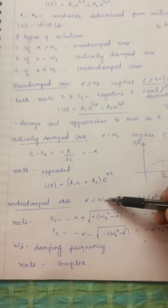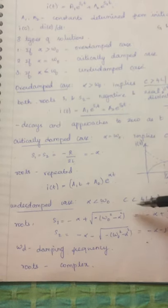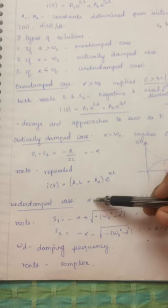In the under-damped case, alpha will be less than omega_0, so the value of C will be less than 4L/R². If you substitute alpha and omega_0 in the characteristic equation, you will get the roots, which are of complex form.